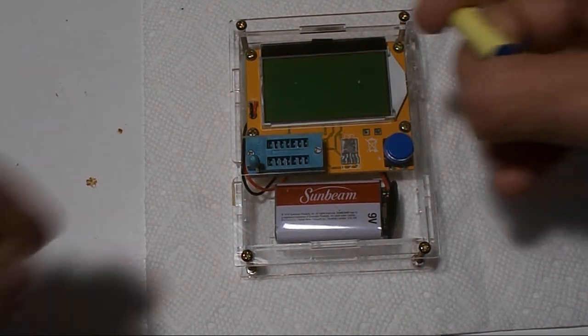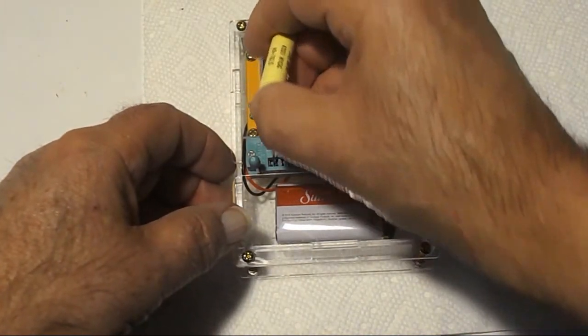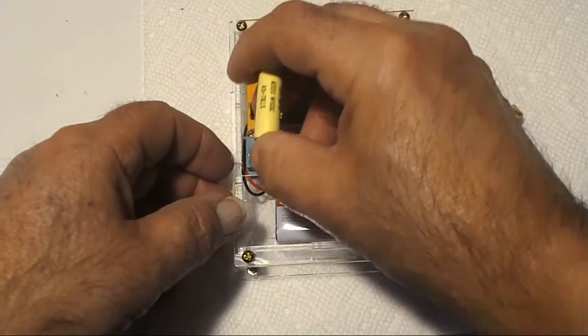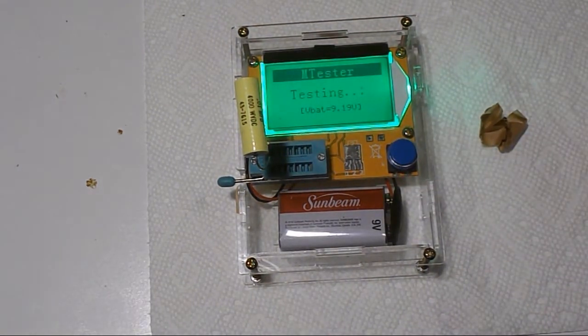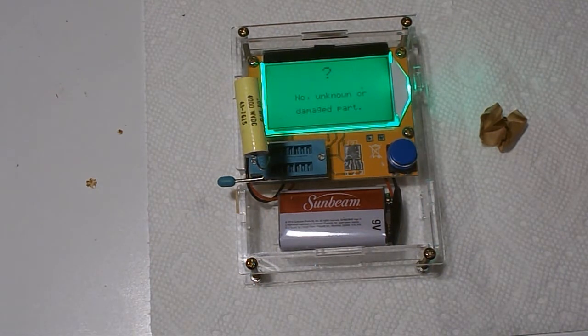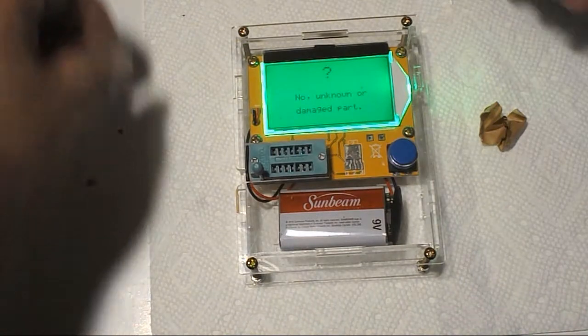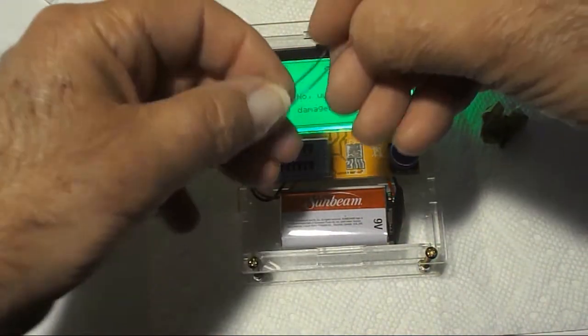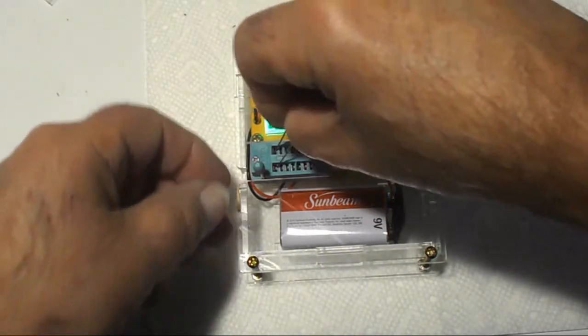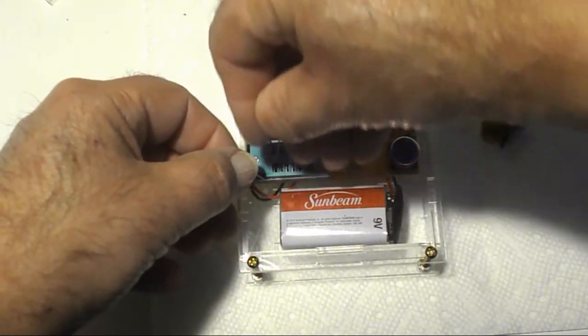So I got a .01 microfarad capacitor and I know what it is. And let's see, put that in there. See what it does. Shows up to nine volts. Unknown or damaged part. Well, it's not a damaged part. I've checked from the other meter and it works fine. So that's leading me to believe there's something wrong with this dumb thing. Like I said, these cheap Chinese testers you don't know if they're gonna work or not. Like I said, I got it cheap. I mean it was like less than twenty bucks for the whole thing with the box.